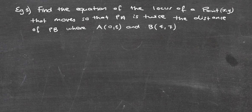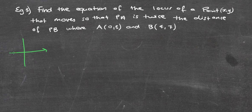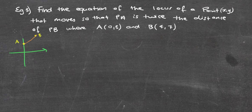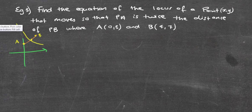The next question is a bit more challenging: find the equation of the locus of a point P(x, y) that moves so that PA is twice the distance of PB. Let's say A is (0, 3) and B is (4, 7). We're looking for the locus so that the distance from P to A is twice the distance from P to B — for example, if P to B is 5, then the distance from P to A would be 10.